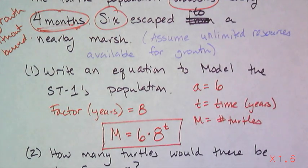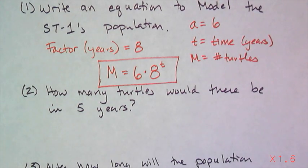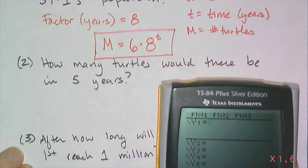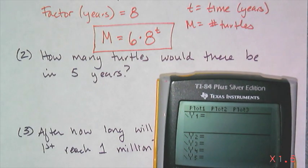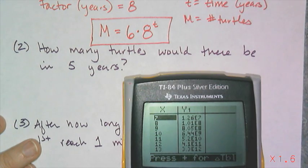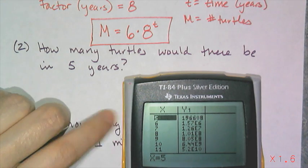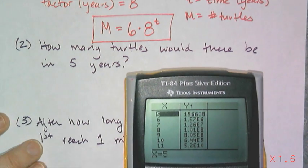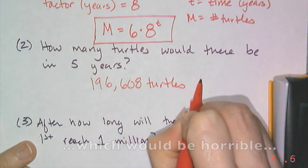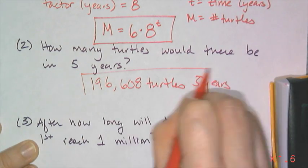So this equation models the turtle population as it doubles every four months. Now, I can use my equation to answer some questions and make predictions about the turtle population. And this is where my graphing calculator comes in super handy. Now, I don't have x and y. I used m and t, and I just have to know which one's which. M is going to be y, t is going to be x, and so my equation that I enter in is 6 times 8 raised to the x power. And then I can go to my table, and I can answer the question as to how many turtles there will be in five years. So if I go to the time entry of five, I get the number 196,608. So according to my model, if it holds true, then that's how many turtles I will have in five years, which is an insane number of snapping turtles.